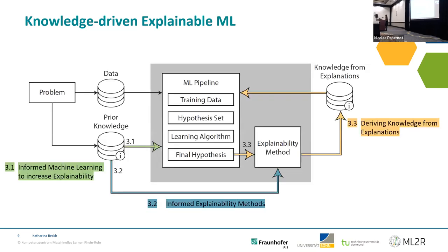Our result now looks like this. In comparison to the framework seen before, we now have the explainability component in this illustration, and we identified three different approaches in these papers. The first one we termed informed machine learning to increase explainability, which is the typical flow already seen. Then we have informed explainability methods, where for the first time an explainability method appears, integrating prior knowledge directly into it.